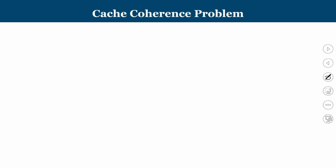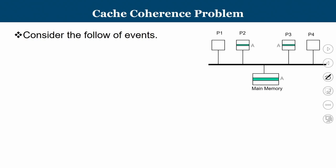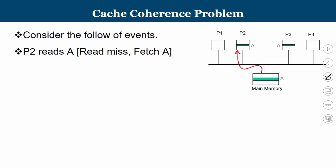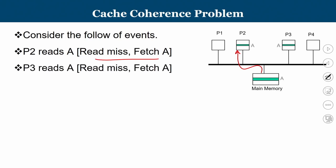Consider four processors P1, P2, P3, and P4, all initially empty, with a shared memory location A. P2 reads A — a read miss — and fetches the value into its local cache. P3 also performs a read — another read miss — and fetches A from main memory into its local cache. Now imagine P2 wants to write: it is a write hit, so the update happens in the local copy.